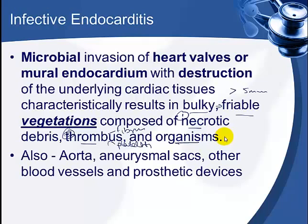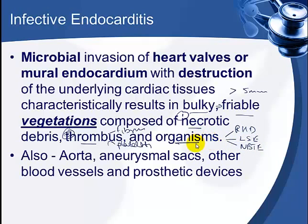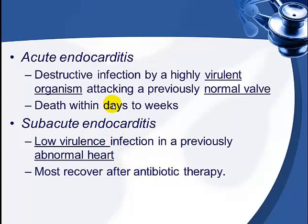The presence of organisms allows us to easily differentiate infective endocarditis from other types of valvular diseases where organisms are not found, such as rheumatic heart disease, Libman-Sack endocarditis, or NBTE. Apart from the heart walls and the mural endocardium, infective endocarditis can also affect the aorta, other blood vessels of the heart, aneurysmal sacs, or any prosthetic device present inside the heart, such as prosthetic valves.